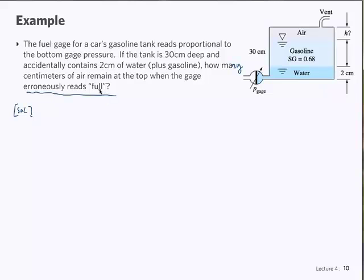So what's our solution? If the tank were full of gasoline first, what would be the pressure? We would have 30 centimeters, that would be the column of gas, right? Like the whole tank full of gas. So the pressure at the gauge for a full tank is equal to the specific weight of gas multiplied by H, the full height of the tank, which is given, so we can calculate this.